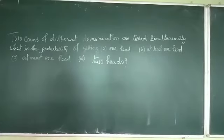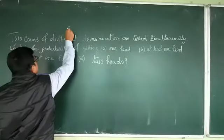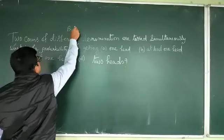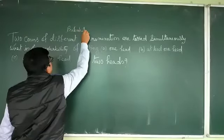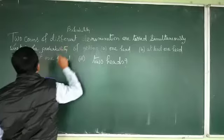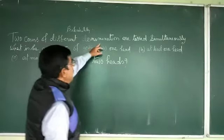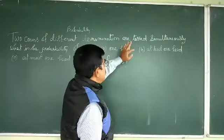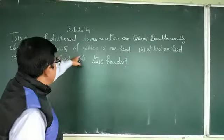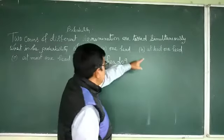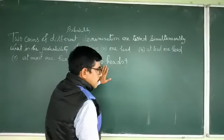This is the first question of receptor probability. Two coins of different denominations are tossed simultaneously together. What is the probability of getting one hit, at least one hit, at most one hit, and two hits?